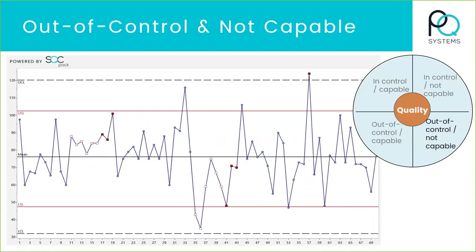The next state of quality is 'out of control and not capable.' This is kind of the worst of the worst, or maybe you might look at it as an opportunity. We have runs of points above the mean, runs of points below the mean, points above the upper control limit, maybe below the lower control limit. We also have points outside the spec limits. So this is not predictable — also known as out of control — and it's not capable of holding specs or producing a product or service to the required specifications.